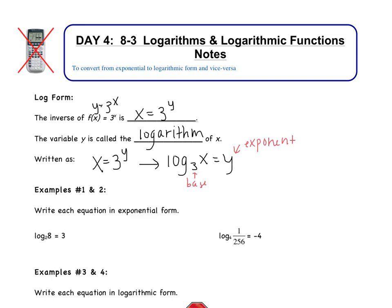So looking at examples 1 and 2, we are given two logs and we need to write them in exponential form. So looking at the first one, it says log base 2 of 8 equals 3. 2 is our base. 3 is the exponent. So the way to write this is 2, the base, to the third power equals 8.